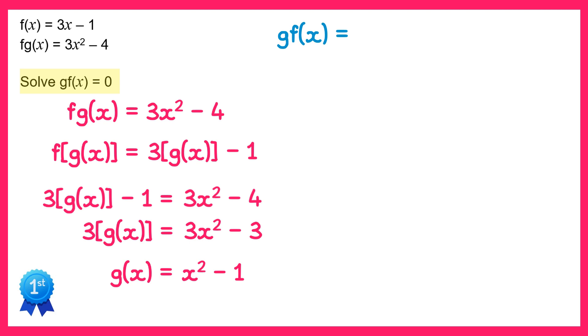So the g function is x squared minus 1, so we're going to do 3x minus 1 all squared, so that's the f function squared, take away 1. So that's gf of x.